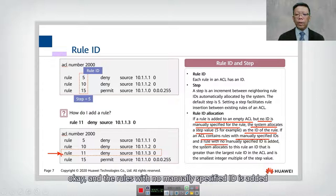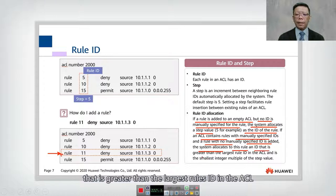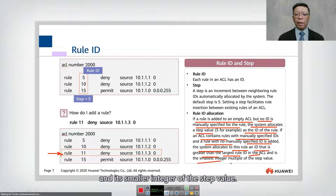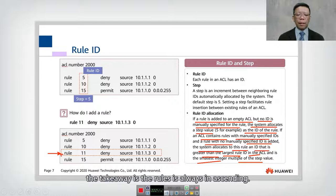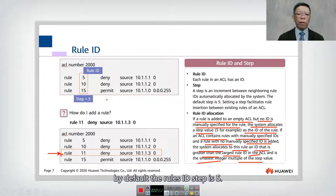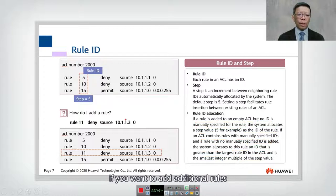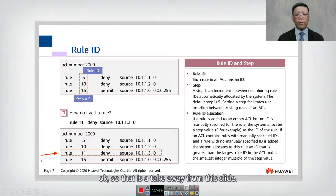And the rules with no manually specified ID is added. The system allocates to this rules an ID that is greater than the largest rules ID in the ACL and is smaller integer of the step value. So don't worry about this explanation. We are going to do a lab. You are able to understand how this rules ID work. The takeaway is the rules is always in ascending. By default, the rules ID step is 5. If you want to add additional rules, you can use a manual rules. So that is a takeaway from this slide.